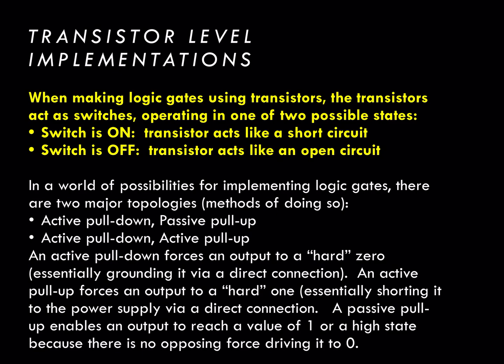The first is the active pull-down, passive pull-up, and the second is active pull-down, active pull-up. An active pull-down means that we actively force an output to a hard zero, implying that there's a direct or short circuit connection between the output node and ground or zero volts. An active pull-up is the opposite — the device actively connects via a short circuit or close to a short circuit an output of a logic gate to a hard one or the power supply.